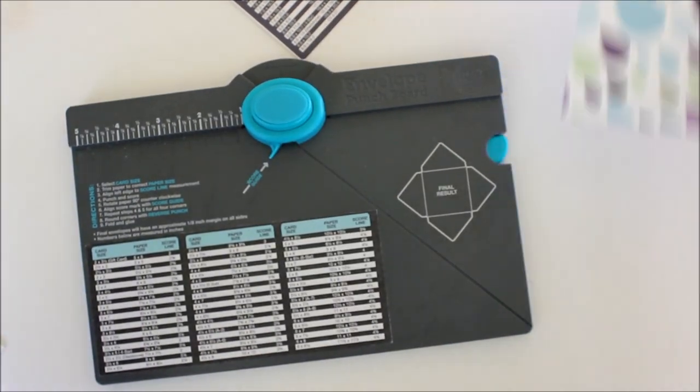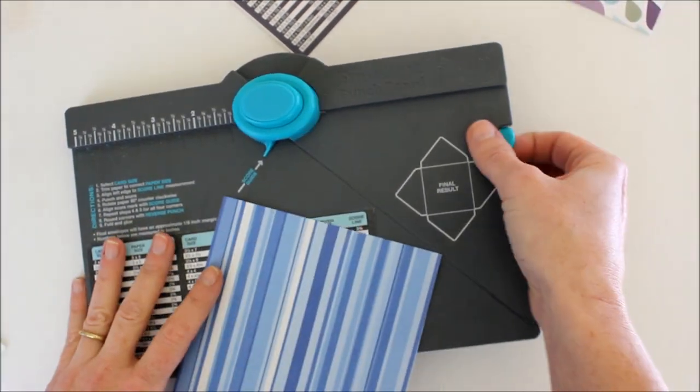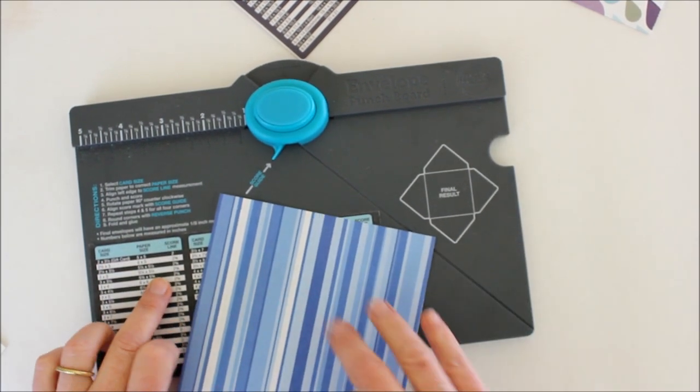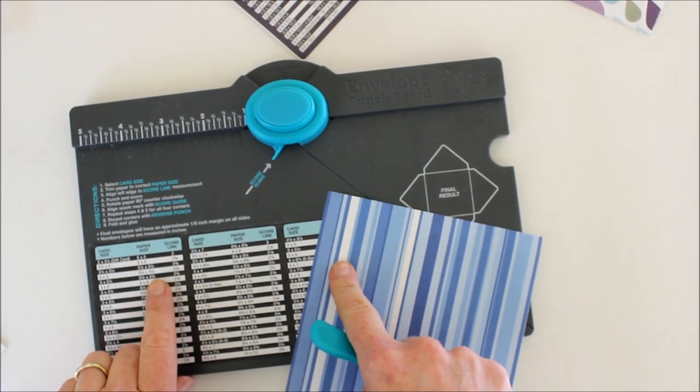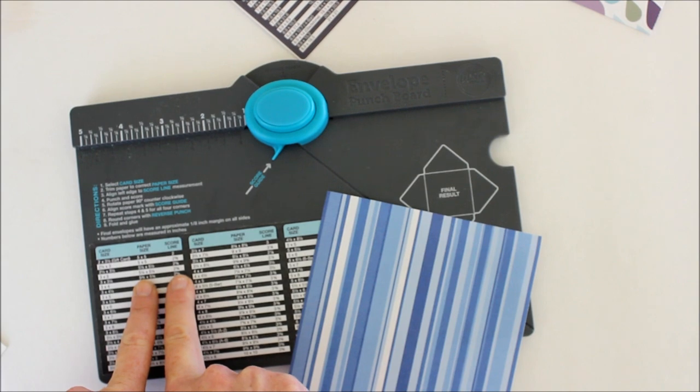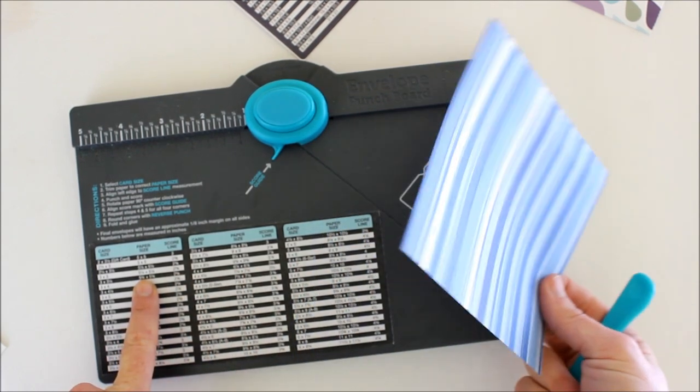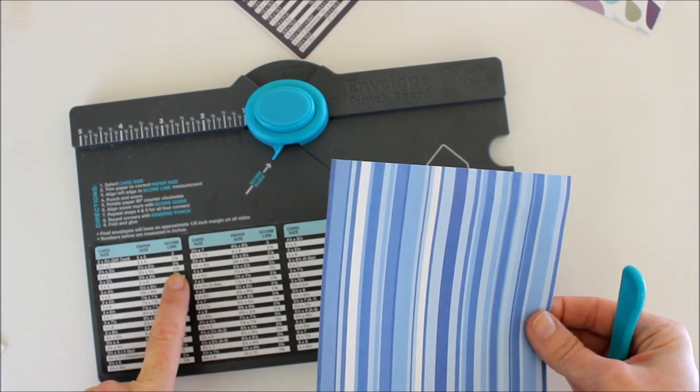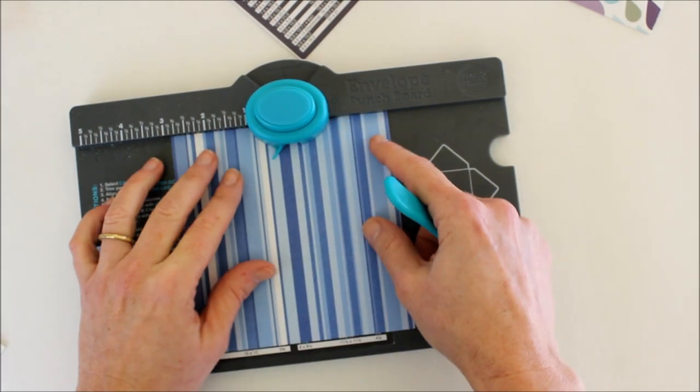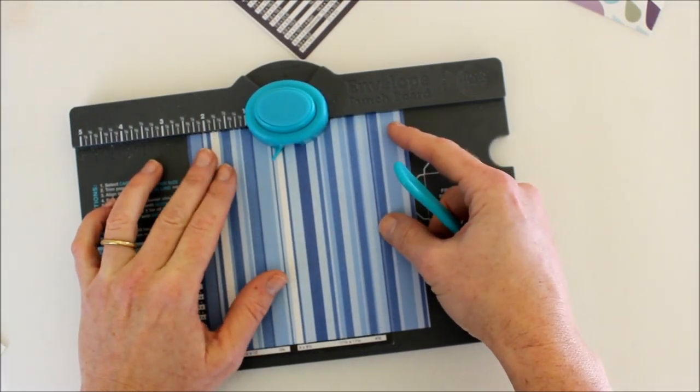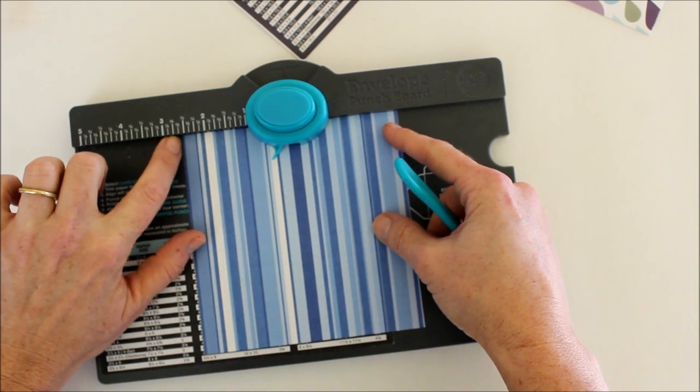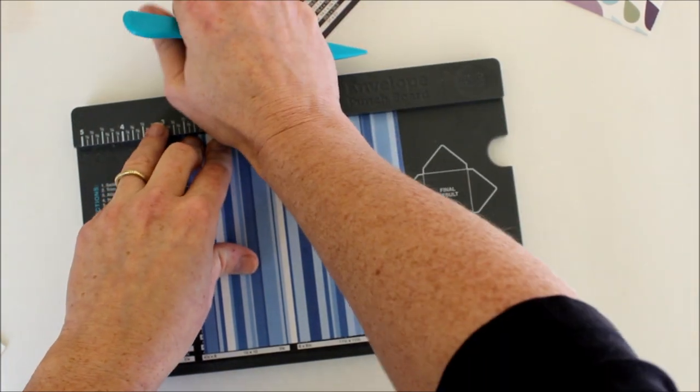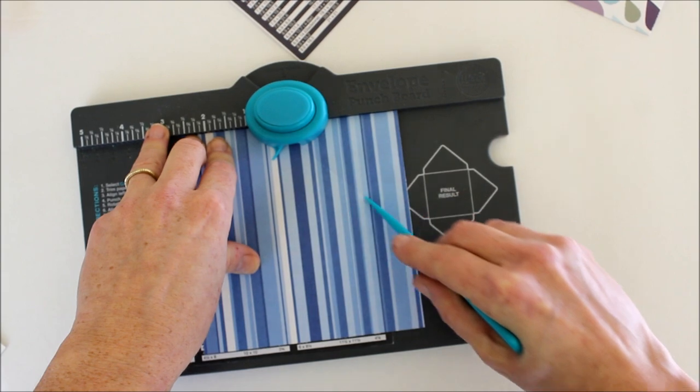I just wanted to show you this is a three by three card which had the inaccurate measurement before. They ask you to start with five and a fourth by five and a fourth sheet of paper and you line it up on the two and five eighths line. So here is the five eighths line, try and get right in the middle of that, and you punch and you score.